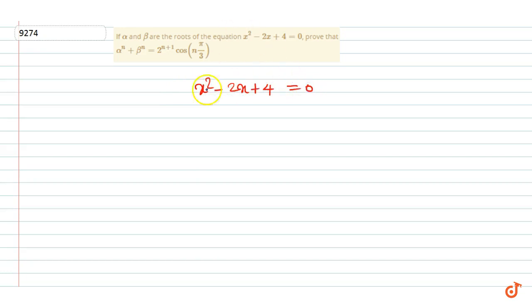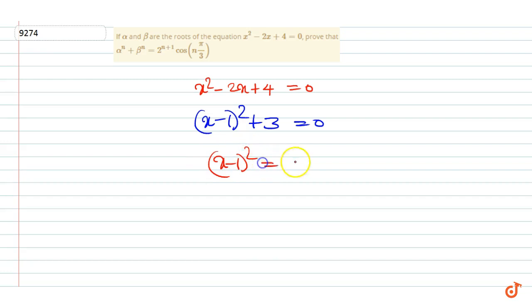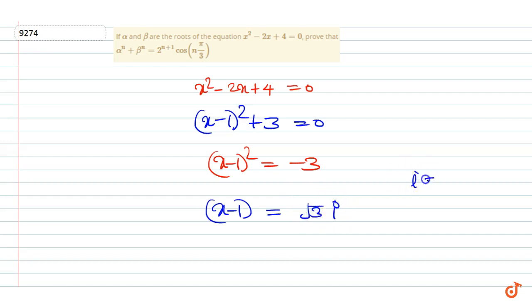We can write (x - 1)² + 3 = 0, or (x - 1)² = -3. Taking the square root, we get x - 1 = ±√3 · i, where i = √(-1).